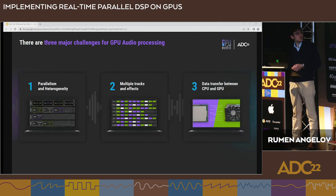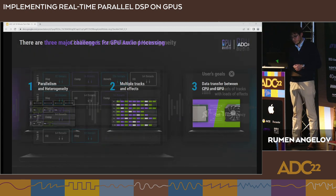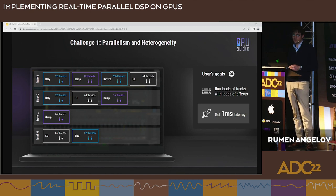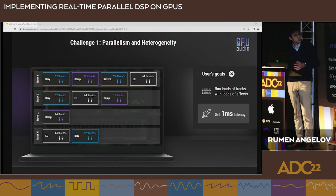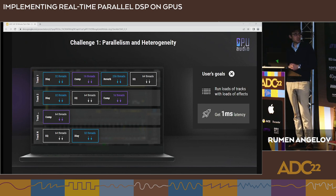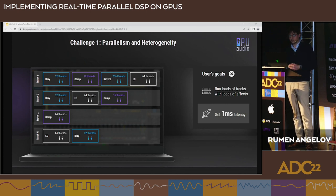The first topic is parallelism and heterogeneity. In order to supply the GPU with sufficient work, we need a lot of parallel threads. This thread count cannot be drawn from each plugin individually — it's basically impossible, and most of the time the thread count in individual plugins is small, not useful for fully leveraging the GPU's power. In many cases we have sequential dependency because effects run one after another.